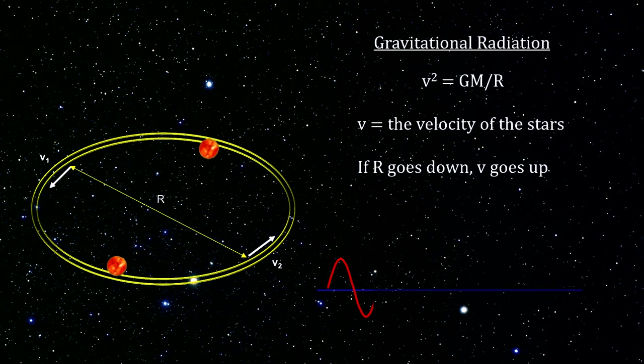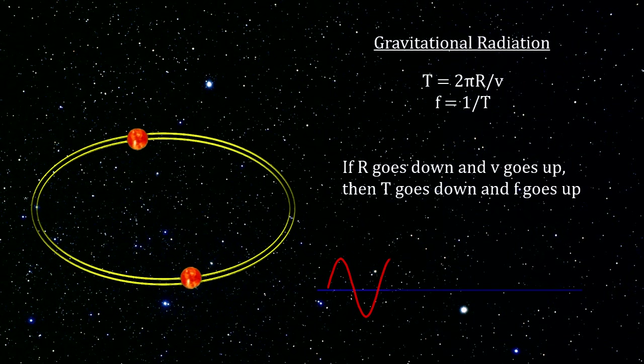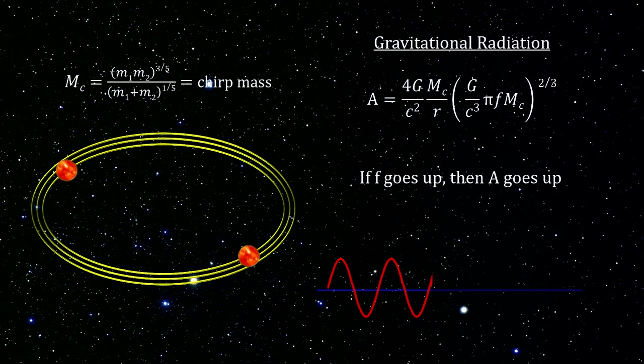This, in turn, increases their velocity. A shorter circumference and faster velocity reduces the time it takes for a full orbit and, therefore, increases the frequency of rotation and, therefore, the frequency of the gravitational wave. And the wave equations show that the amplitude of the gravitational wave will increase with the frequency.